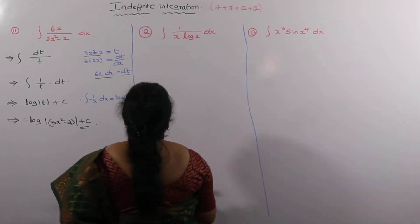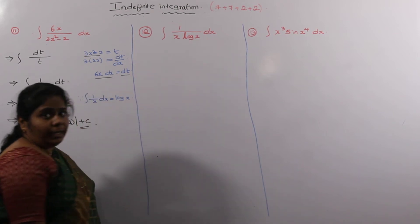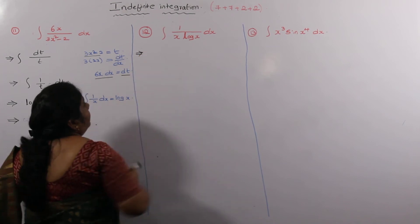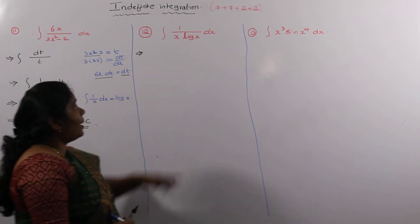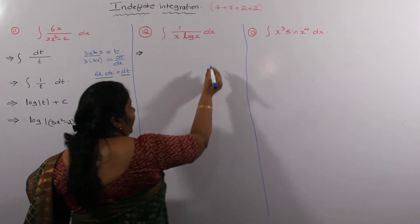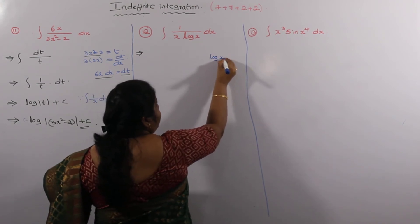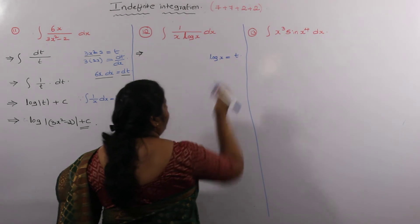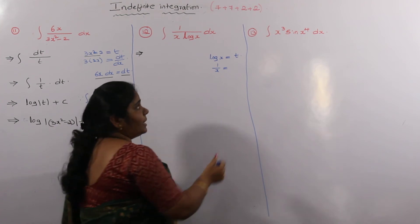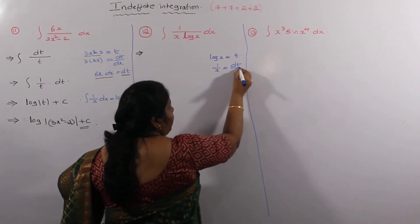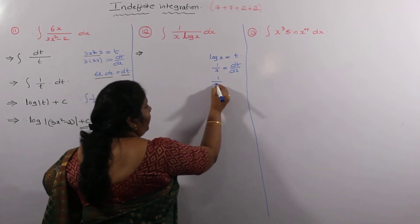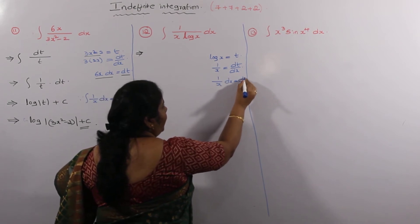Next problem: integral of (1/x) · (1/log x) dx. We take the differentiation part as T. log x differentiation is 1/x. So log x is taken as T. Differentiation of T with respect to x is dT/dx, and moving dx across gives (1/x) dx equal to dT.